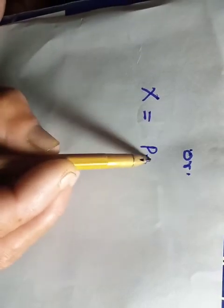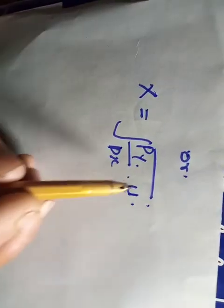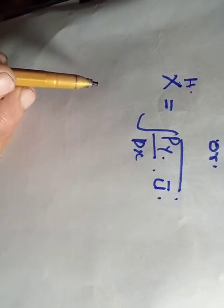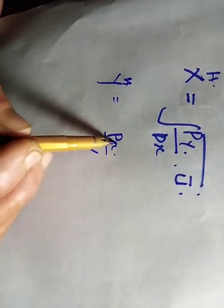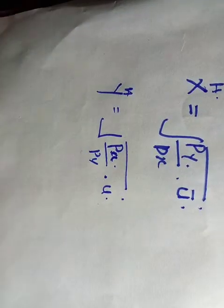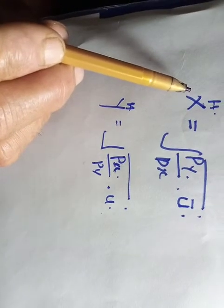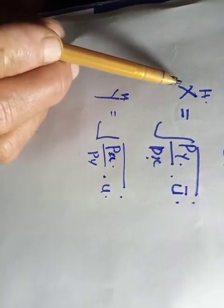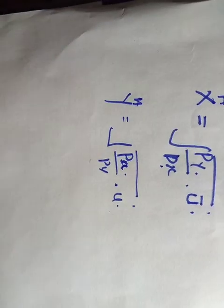So x equals the square root of (py/px) times utility — this is the compensated demand for x. And y equals the square root of (px/py) times utility. It can be observed that demand for x is inversely related to the price of x, directly proportional to utility which is constant, and also related to the price of the other commodity, which may be a substitute or complementary good.